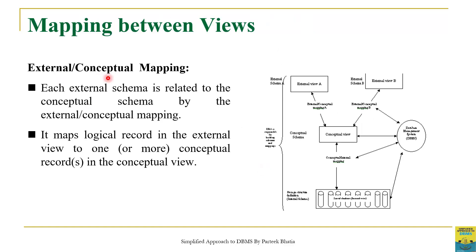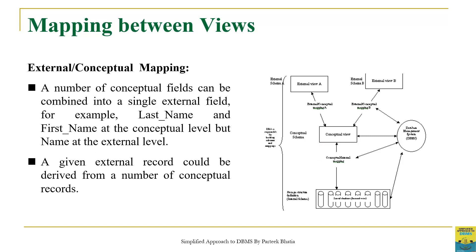The first mapping is External-Conceptual Mapping. External-Conceptual Mapping maps the logical record in the external view to one or more records in the conceptual view. So it basically maps external records with conceptual records. Let us consider an example to understand the concept of this mapping.